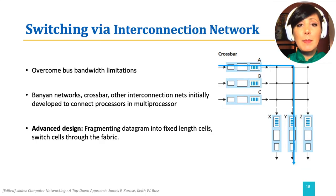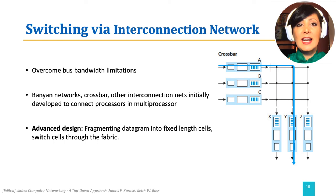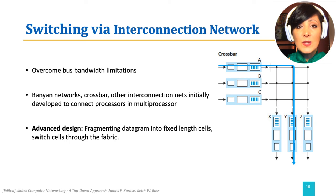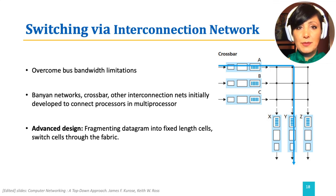Switching via an interconnect network overcomes the problem faced in switching via bus, which was caused by waiting for a shared resource — the bus. It uses a crossbar switch with 2n buses connecting n input ports to n output ports. A switch at the cross-point of the bus from input A to output B opens and closes to determine the switching from input port to output port. A closed interconnect connecting the input port to the output port, signaled by the switch controller, sends the packet to the right output port.